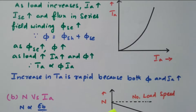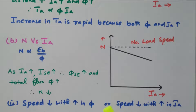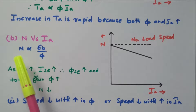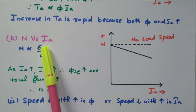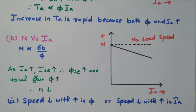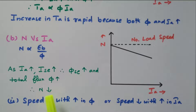Now we will go to the second characteristic: speed versus armature current, N versus Ia. We know the relation: N is directly proportional to Eb divided by φ — directly proportional to back EMF and inversely proportional to flux. When the armature current increases, the series field current also increases, the series field flux increases, and so the total flux also increases.